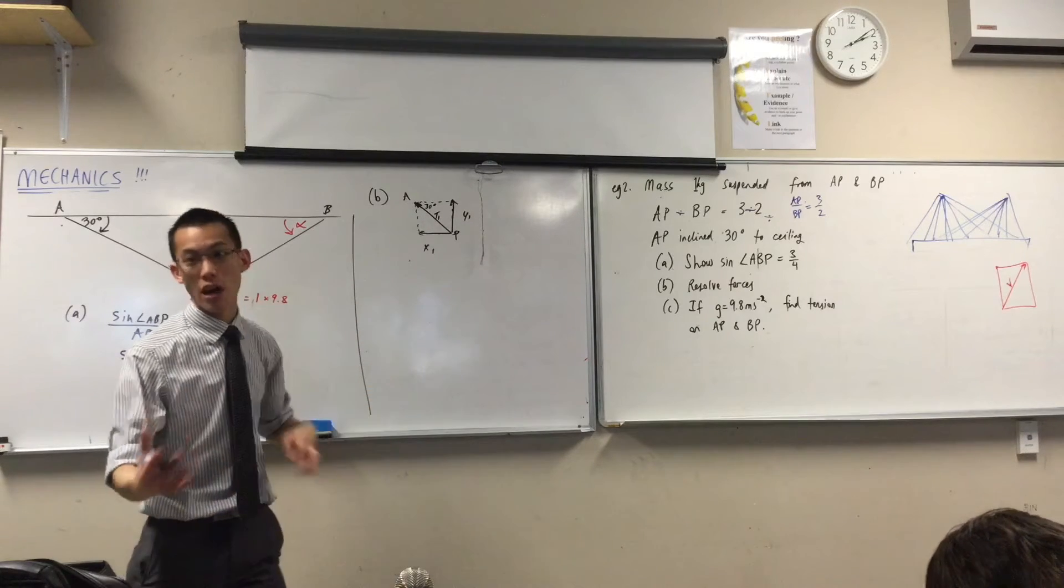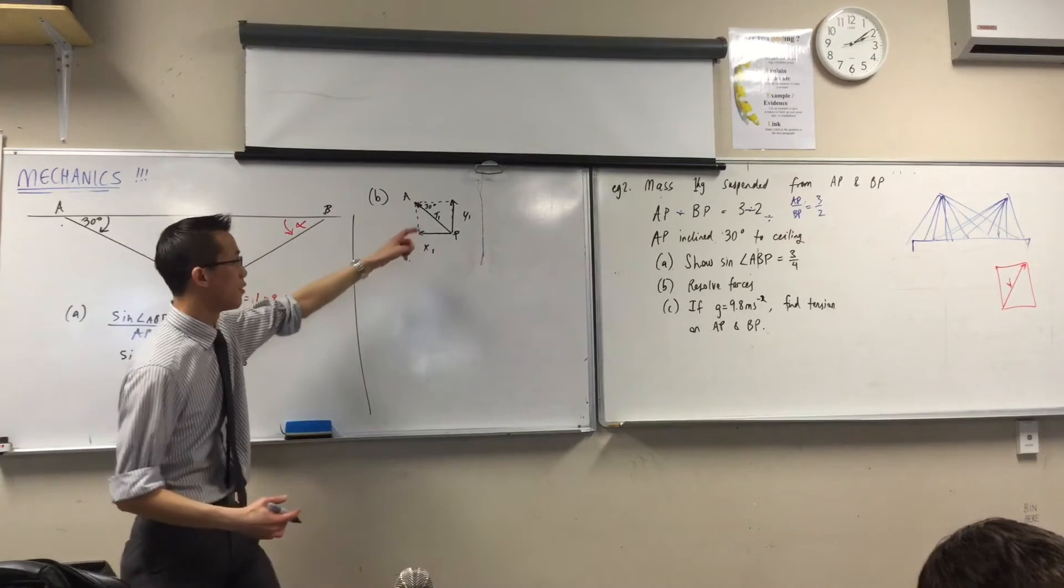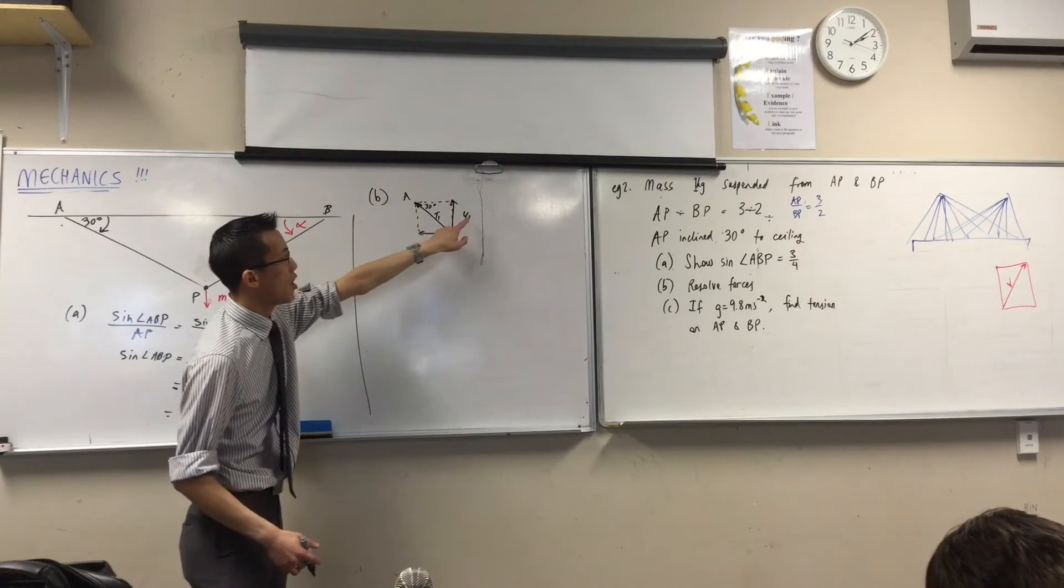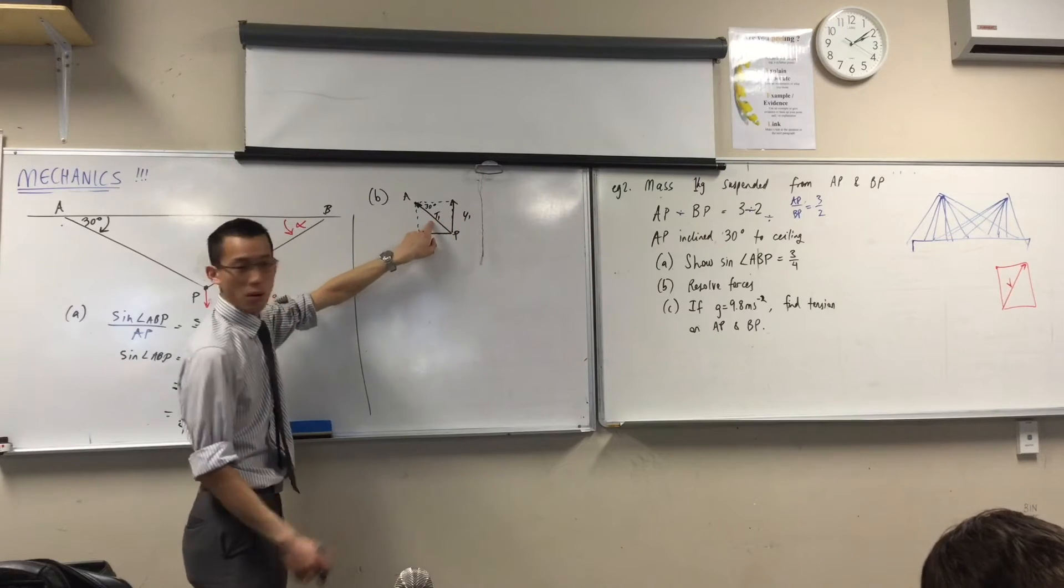So I'm going to use sine and cos. If you remember, for vertical things, if you have a look here in this top triangle, sine 30 is going to be opposite on hypotenuse, right?